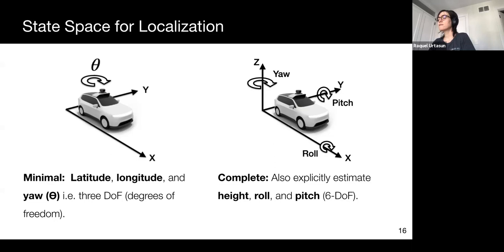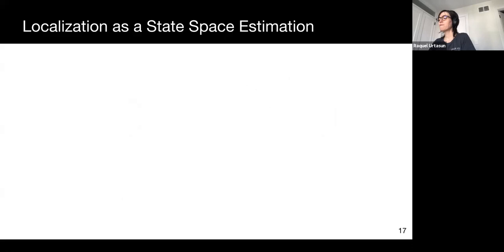Note that we do not only care about a point estimate of the localization, but also a confidence measure over the space. The probabilistic framework allows modeling of uncertainty, as well as tracking multiple pose hypotheses and recovering from failures.